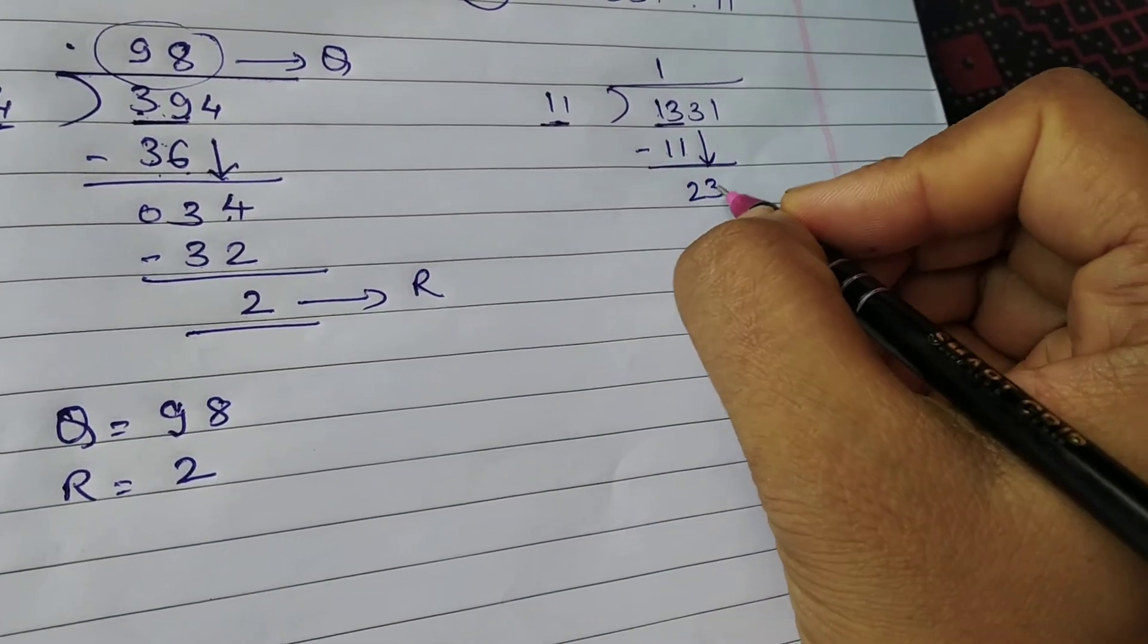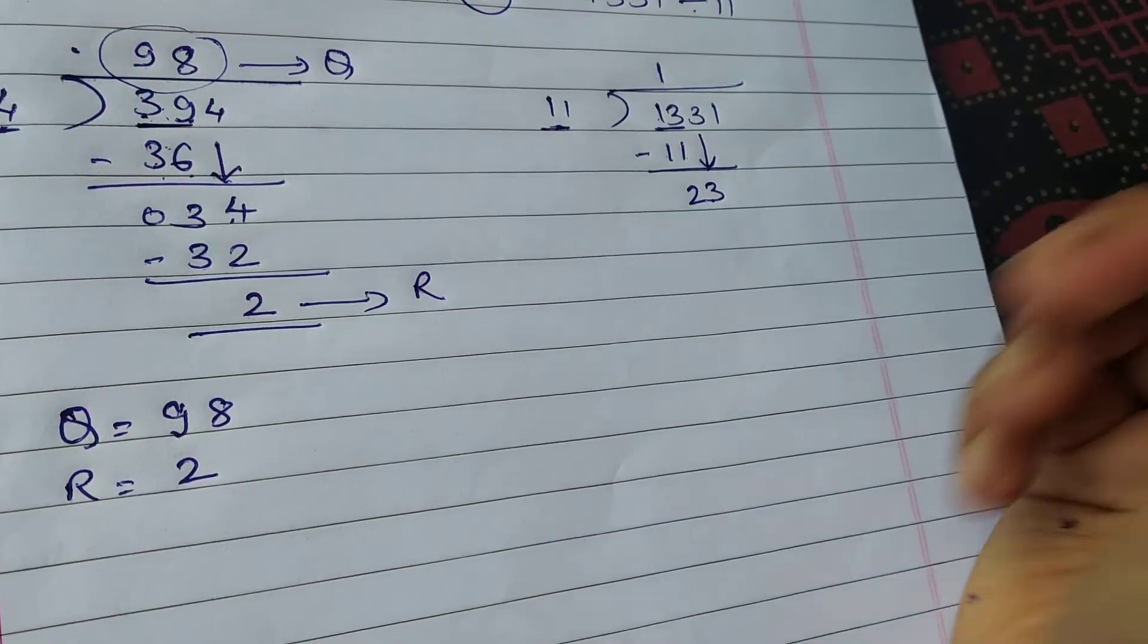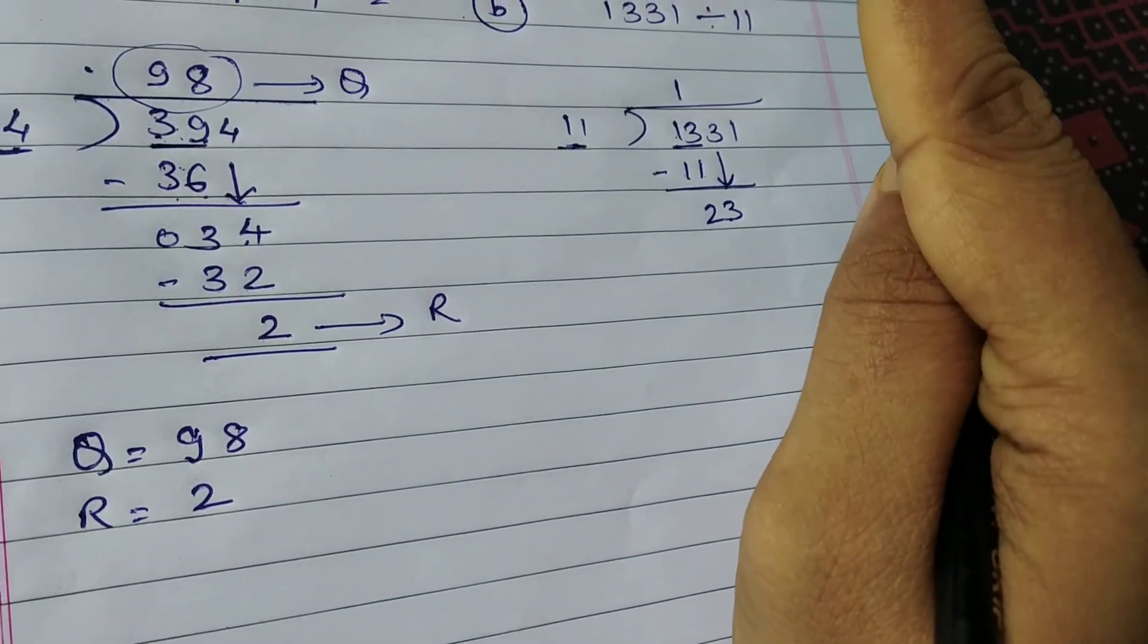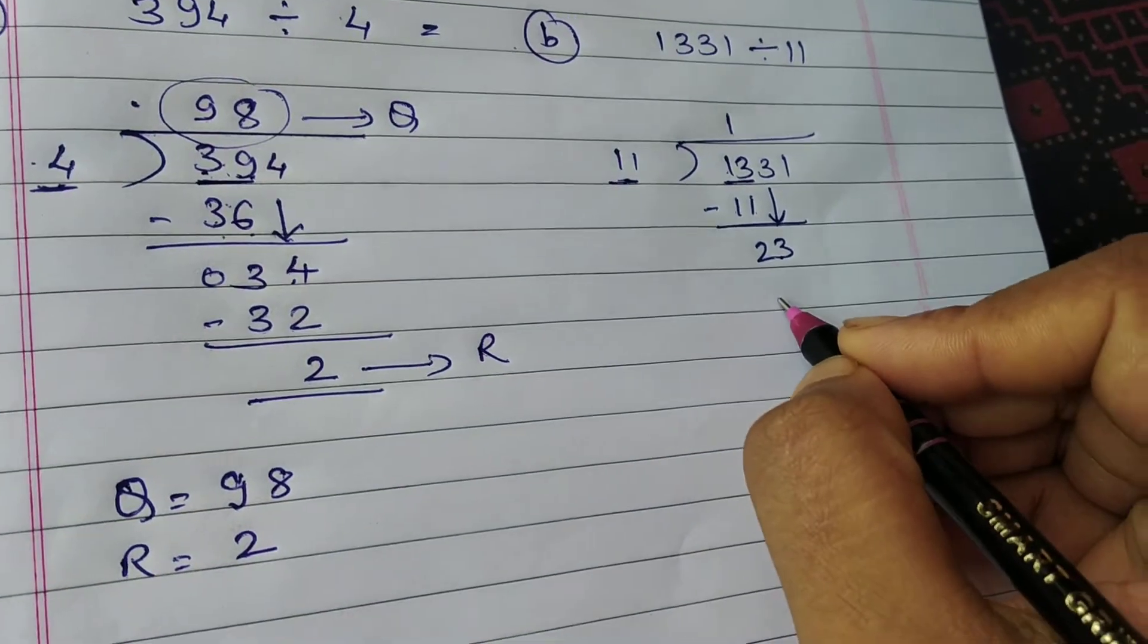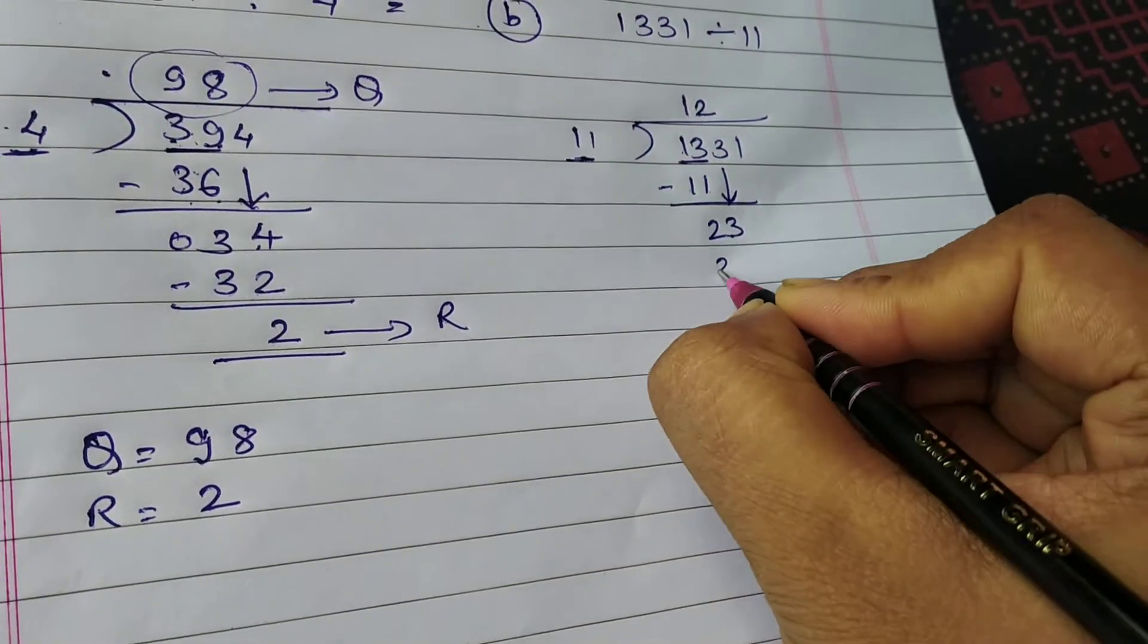So now it is 23. Okay, 11 ones are 11. 11 twos are 22. 22. 22 is the nearer number aur aap subtract bhi kar sakti ho. So 2s are 22.